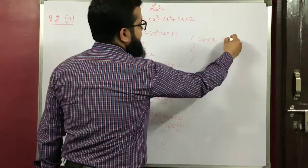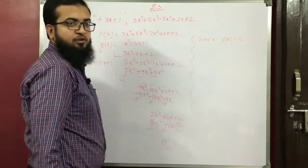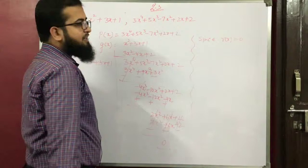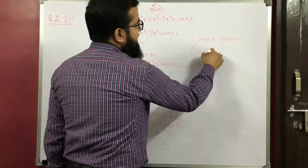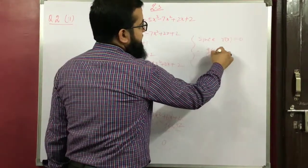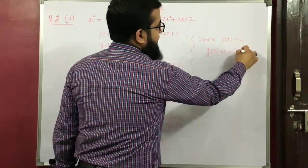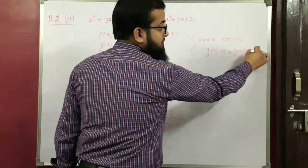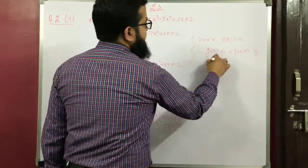Since the remainder r(x) is equal to 0, the remainder polynomial is nil. Therefore g(x) is a factor of p(x).